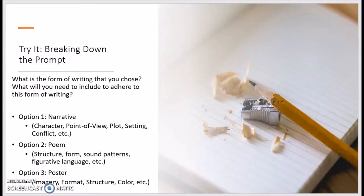In the Try It section of this lesson, you will answer three questions in order to break down the prompt. I've included some ideas on this slide—not an all-inclusive list, but some ideas to get you thinking and a way to check your own work. The first question that you will answer is: what is the form of writing that you chose, and what will you need to include in order to adhere to this form of writing? For option one, this would be a narrative. You would want to consider how you will develop narrative elements such as character, point of view, plot, setting, conflict, etc.